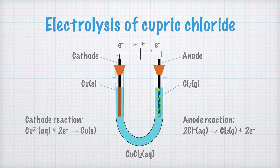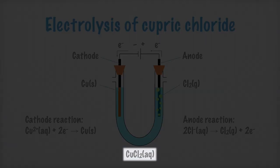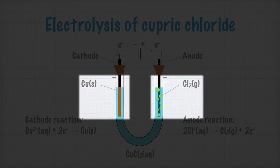What I've shown you now is a standard example of electrolysis. The aqueous cupric chloride in the U-tube is split into solid copper and chlorine gas.